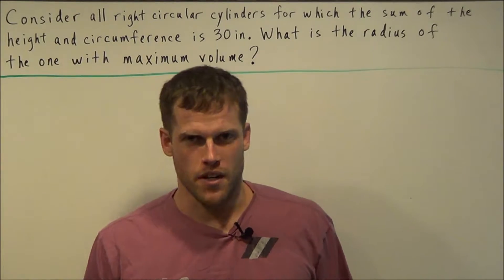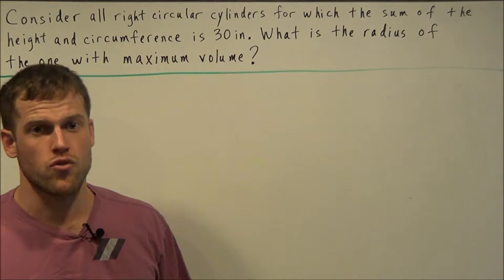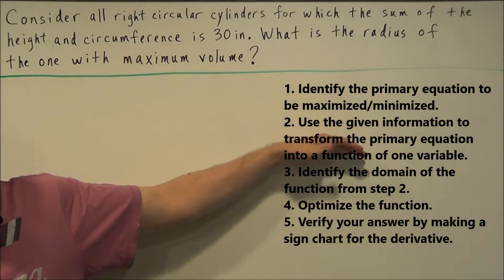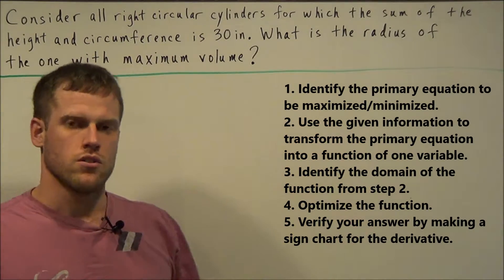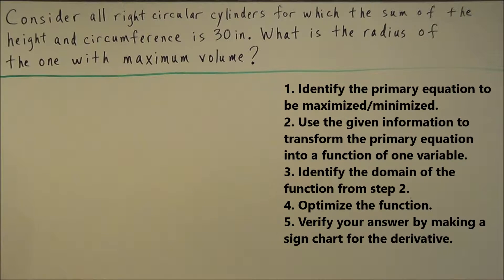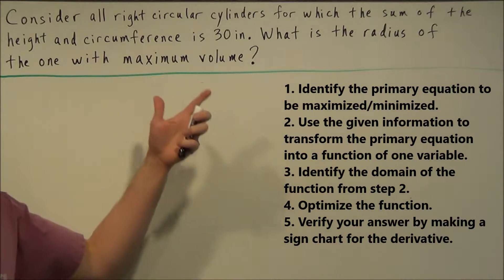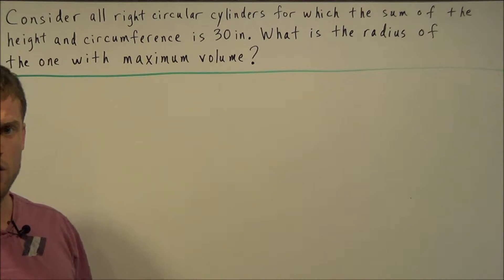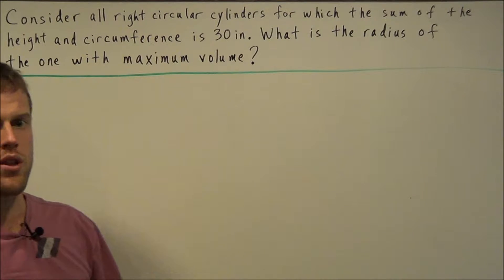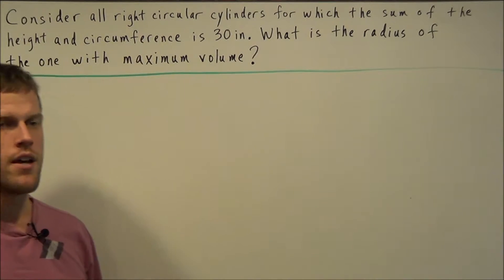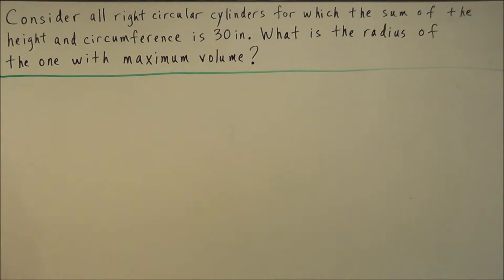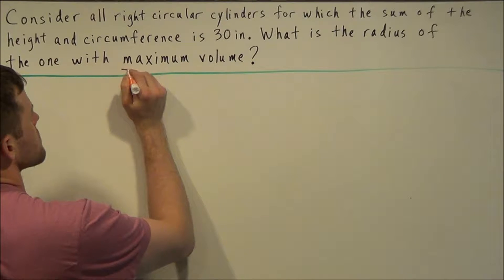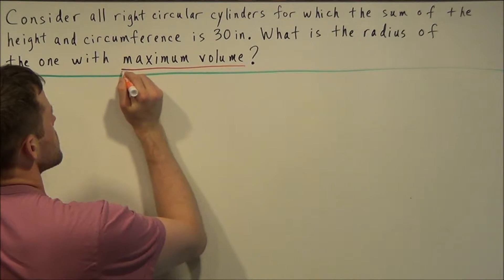Optimization problems can be a nightmare if we don't have a clear direction to go in. So if we follow these steps here, this will give us a path to follow to make these problems a little bit simpler. One of the main parts of solving this is identifying the equation that you want to optimize. You look for a word like maximize or minimize — that's going to reveal the equation we need. In this case we're looking to maximize the volume of a right circular cylinder.